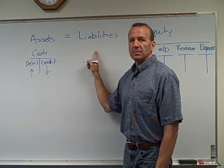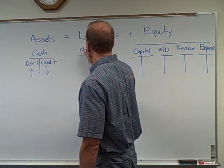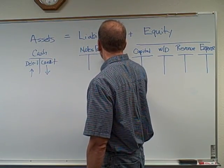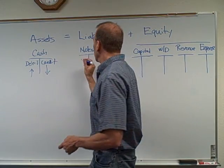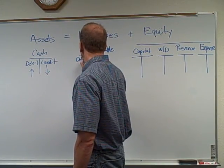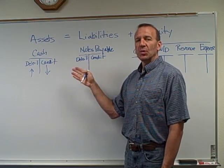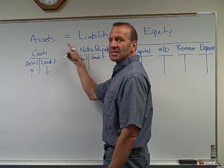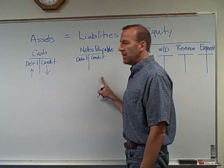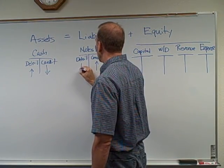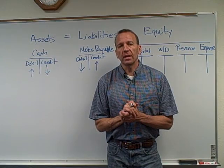Now let's look at the other side of the accounting equation: liabilities. I'll use notes payable as an example, which is typically a loan from a bank — you write a note and owe the bank money. Debit is always to the left and credit always to the right. Since we're on the other side of the equation, if debits increase assets, then on this side it increases with a credit. Notes payable, or any liability, will decrease with a debit.